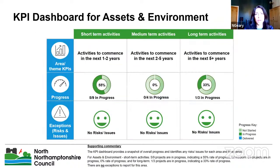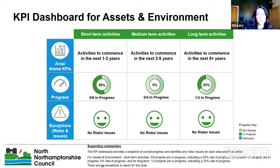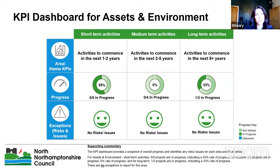The first KPI dashboard is for Assets and Environment. The dashboards provide an overview breaking down progress for each area as well as any risks identified. Along the top row we have term periods: short term is activities projected to begin in the next one to two years, medium term is two to five years, and long term is five-plus years. For Assets and Environment short-term activities, 5 out of 9 projects are in progress at 55%. For medium term, no projects have commenced yet. For long term, 1 out of 3 projects is in progress at 33%. There are no exceptions to report for this area.